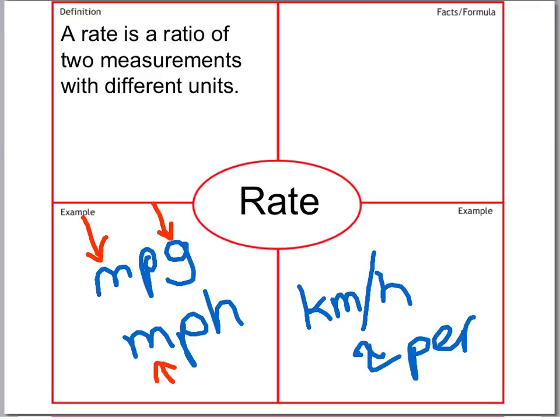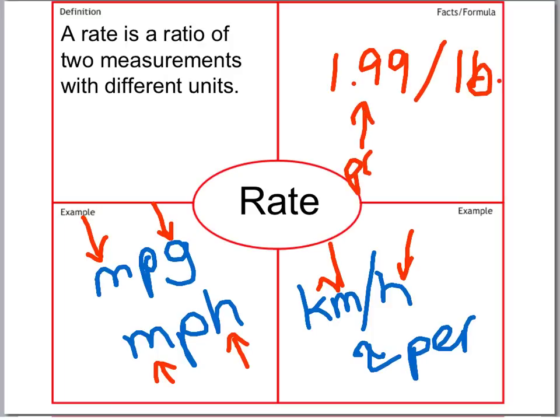Here again, distance. Here, time, distance, time. We could have other rates. $1.99 per pound for apples, that would be price. That would be a weight. All these would be examples of rates.